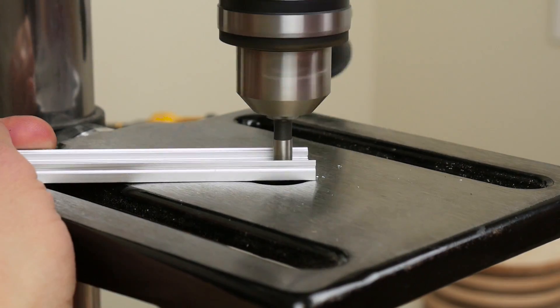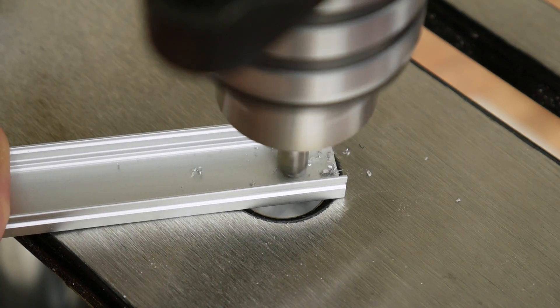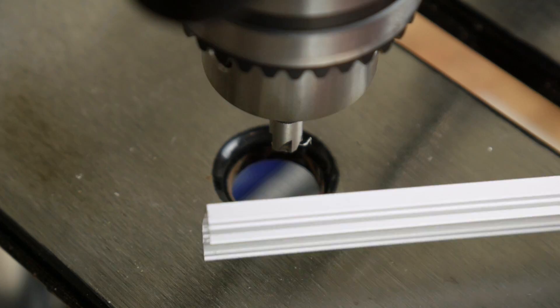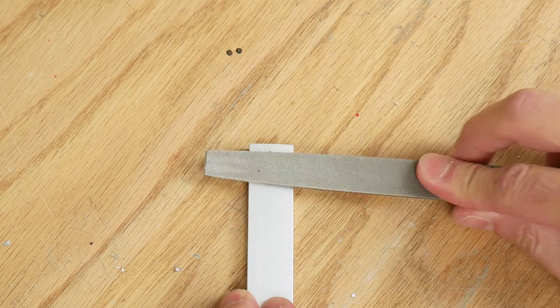I went back and countersunk the holes in the channel with a quarter inch countersink bit. The countersink bit caused the back of the channel to flare out a little, so I filed it down with a flat file.